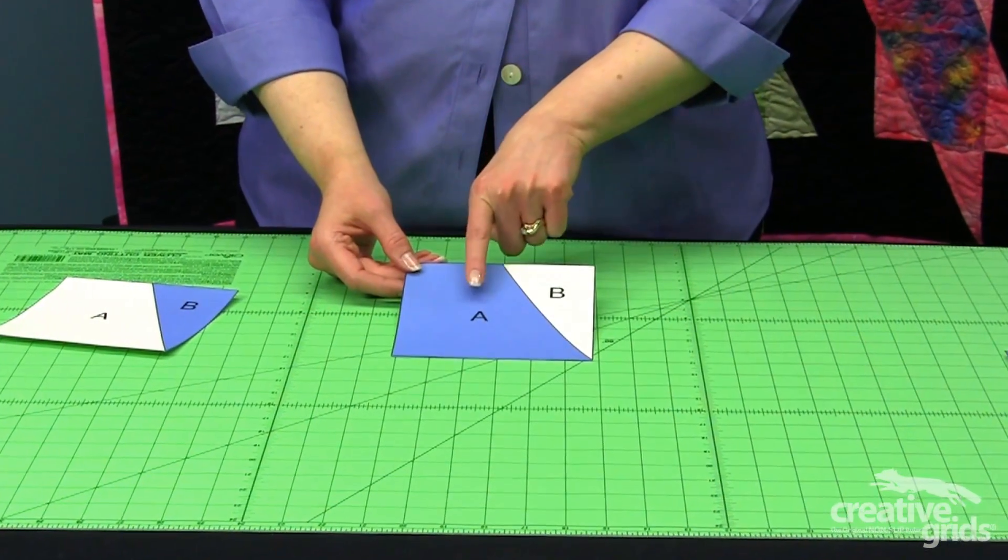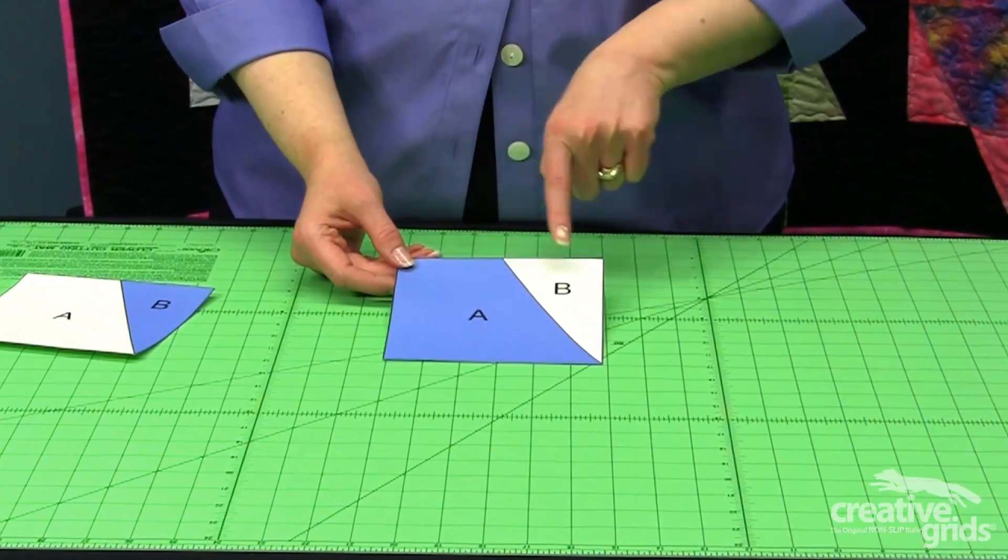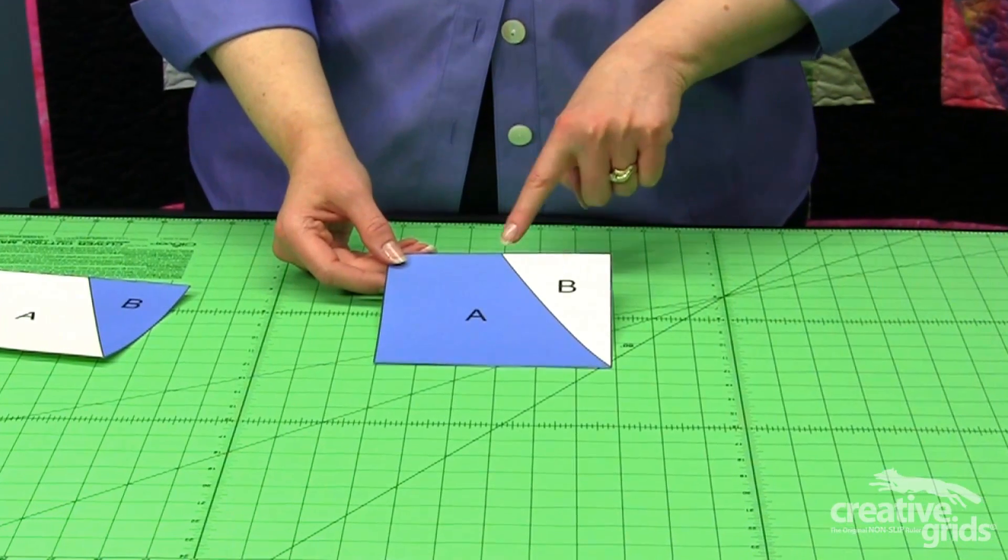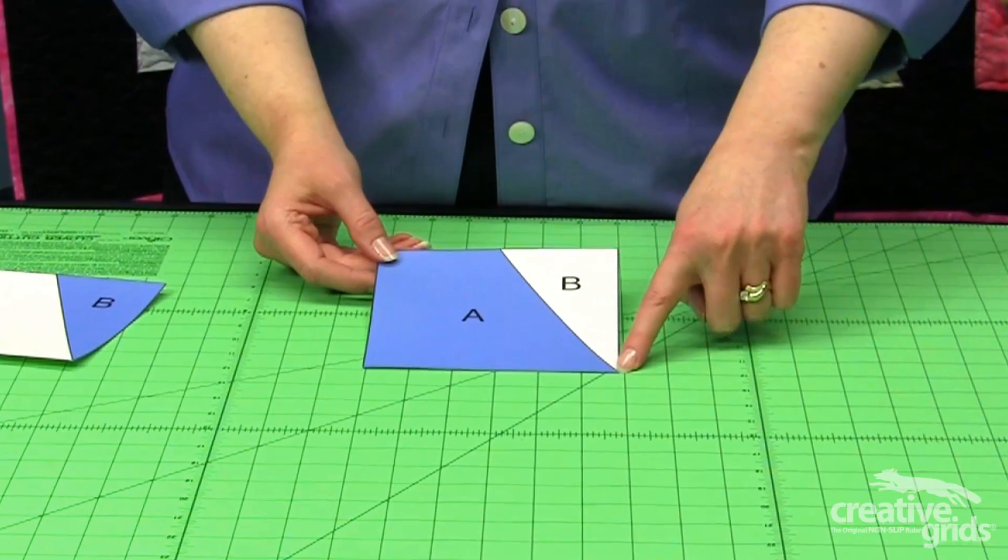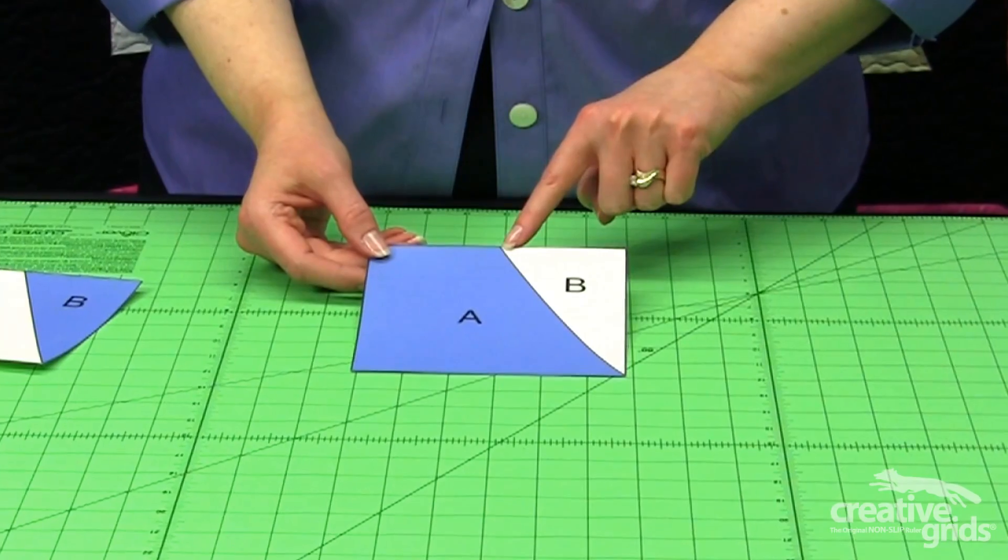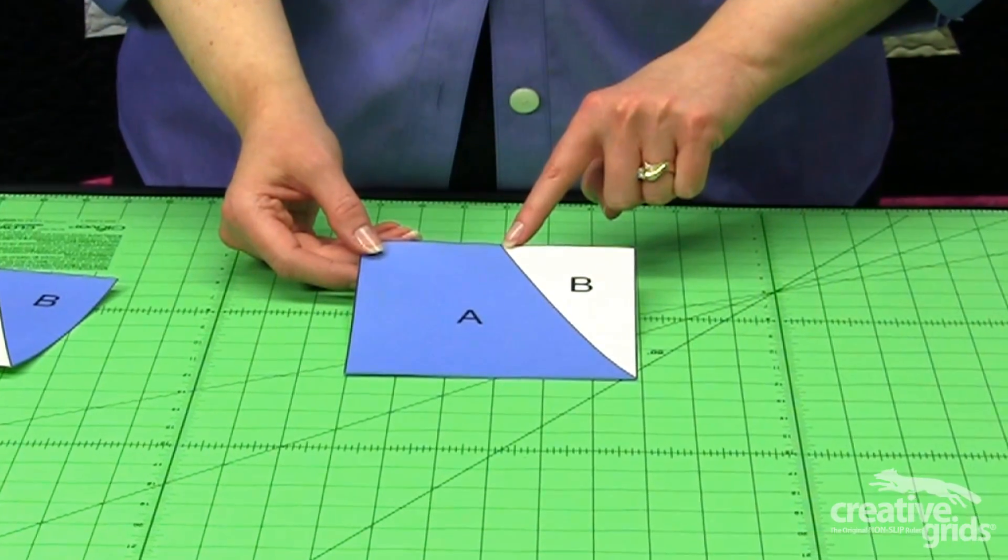The Lazy Angle Block is composed of two pieces: A, the large part, and B, the small part. The Lazy Angle itself runs from the corner to the center of the side when sewn into your finished quilt project.